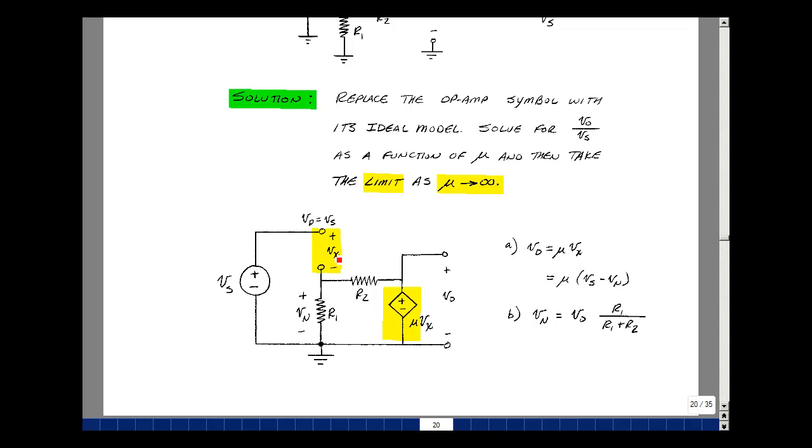So what's Vout? Vout is just the controlled source here, mu times Vx. What's the voltage Vx? It's the positive pin minus the negative pin. I'll call it Vp and Vn. Also, this is equal to Vs. This node, Vs minus Vn times mu, would be the voltage here, which is the output voltage. I have the output in terms of the input, but also one of these other internal node voltages. So I need to get rid of this variable.